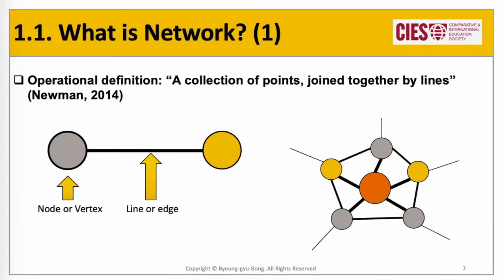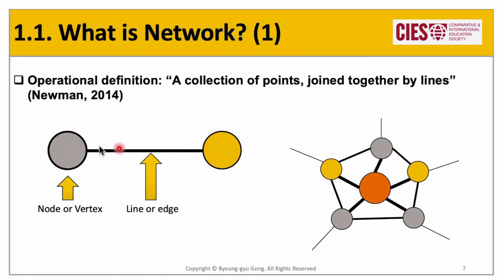Then, what is the network? It seems very complicated and difficult to define at first, once you see a large complex global network. But let's try to zoom into just one part. It is inversely simple, and if you felt that way, you're right. The basic element of the network is a pair of dots with a single connecting line.